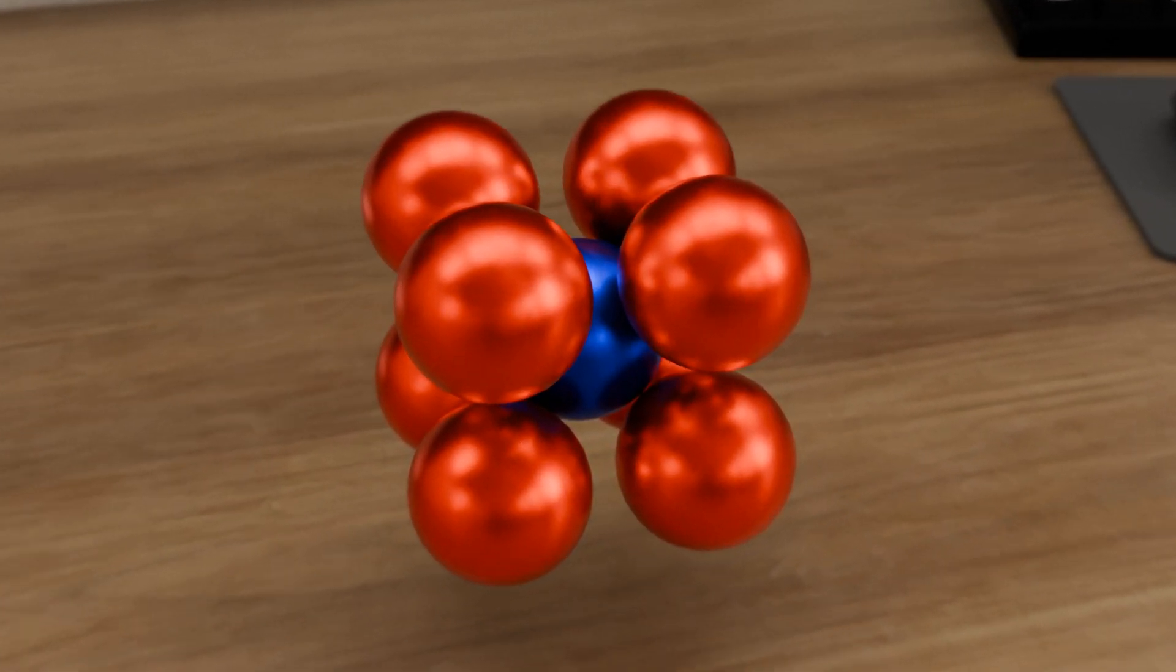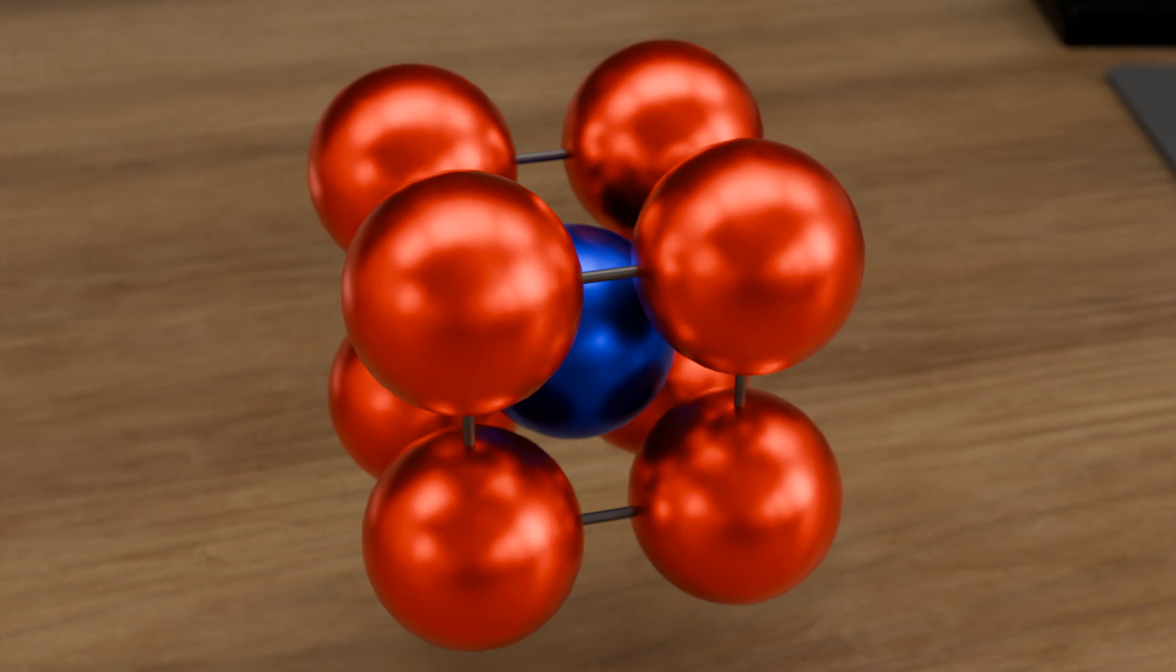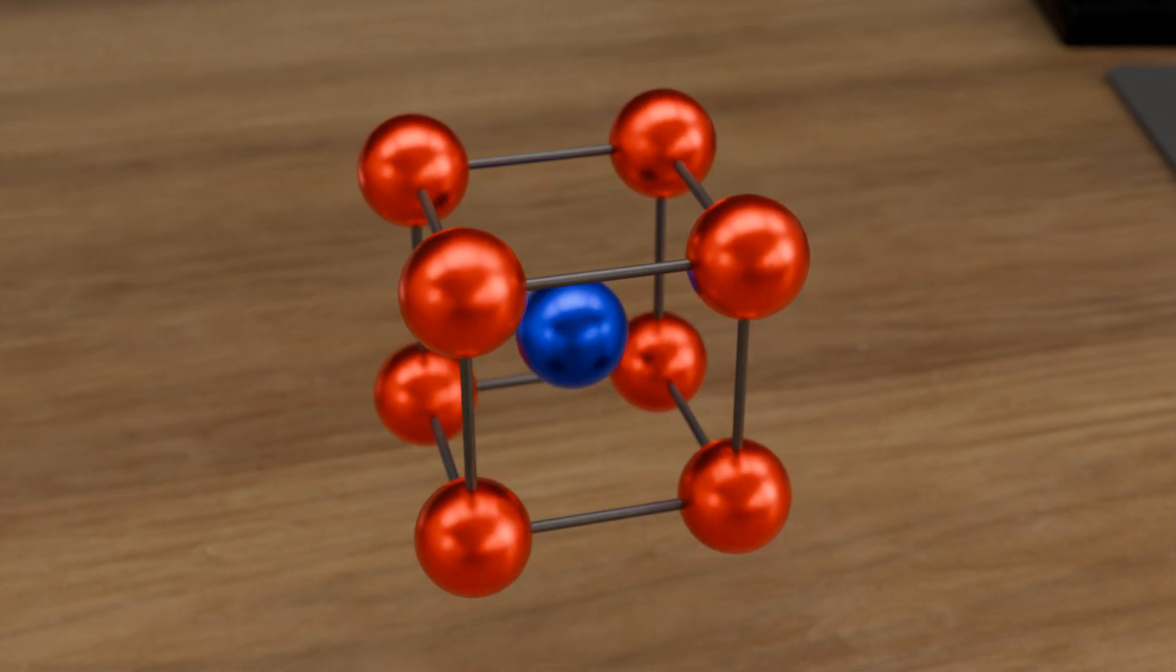In addition to the corner atoms, there is now another atom centered in the middle of the cube. This arrangement of atoms in the unit cell gives the body-centered cubic lattice structure its name.